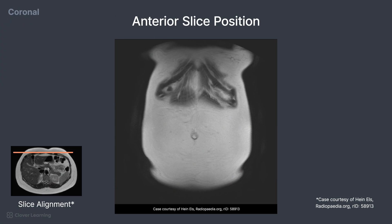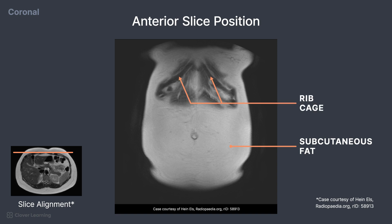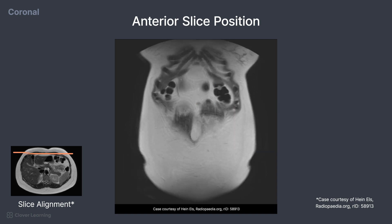On this first coronal slice, we can see the subcutaneous fat as we begin to see a shadow of the rib cage emerge. Moving posteriorly through the body,